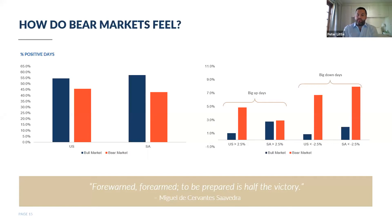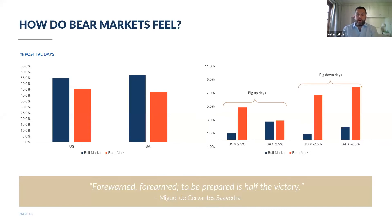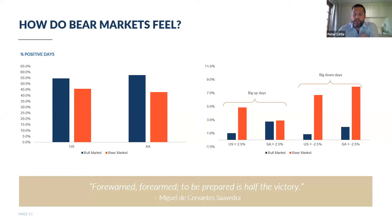It's the extreme level of those moves that we tend to experience more in bear markets. The chart on the right-hand side shows blue bars for bull markets and red bars for bear markets. Looking at moves in the US market greater than two and a half percent in a single day — you're very unlikely to experience those in bull markets; less than 1% of days in bull markets are up over two and a half percent. In bear markets, about 5% of days are up over two and a half percent. This creates a lot of FOMO — you see big bounces and people worry they've missed the bottom, but these big up days are really common in global bear markets.